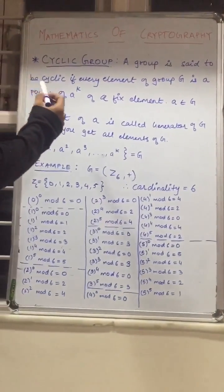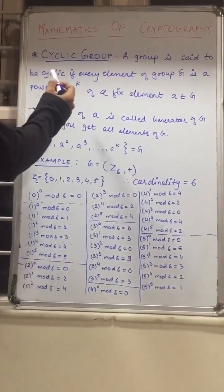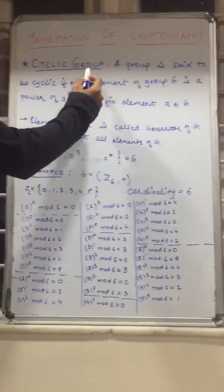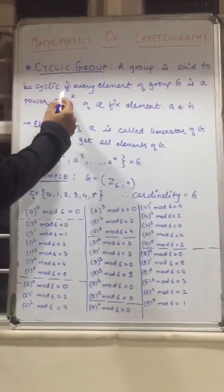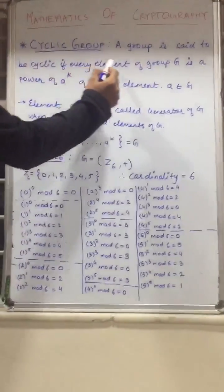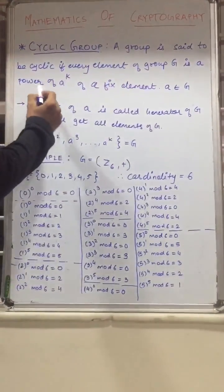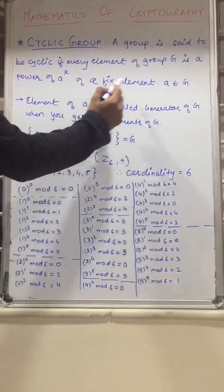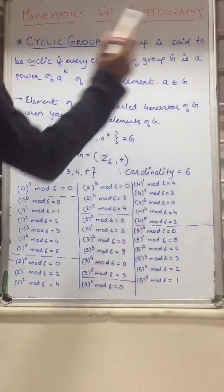Hello guys, welcome to lecture 3. In this lecture I will teach you cyclic group. What is cyclic group? A group is said to be cyclic if every element of a group G is a power of a raised to k of a fixed element, where a belongs to G.